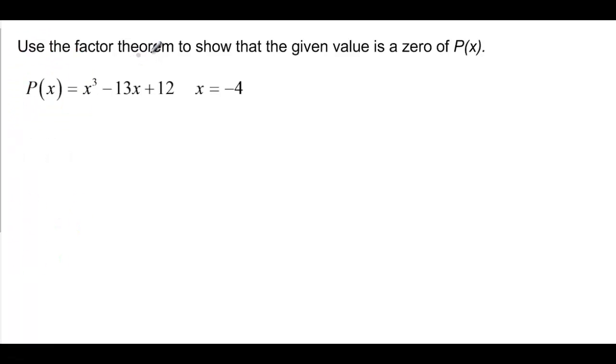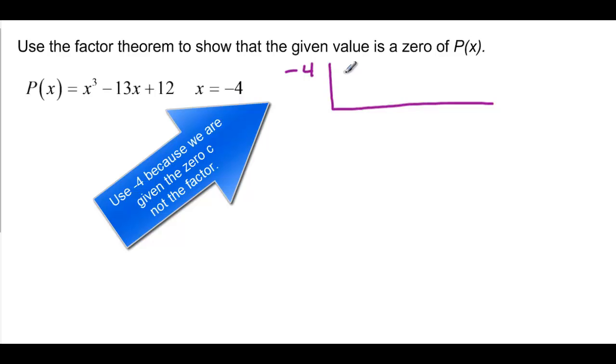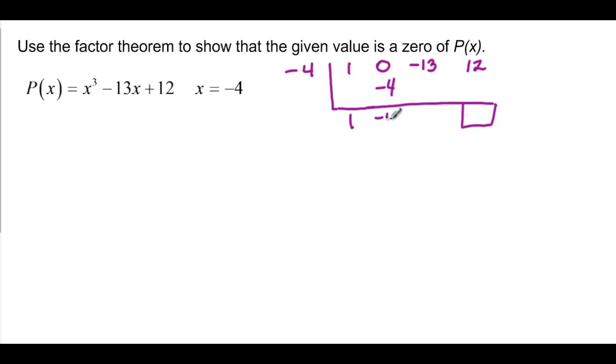Now we want to use this factor theorem again to show that the given value is a 0. So we should be able to use our synthetic division again and say negative 4. And then we have, bring down the 1, multiply, we get negative 4. And adding 0 and negative 4, we get negative 4. Negative 4 times negative 4 would be positive 16. And when we add, we get 3. And 3 times negative 4 is going to be negative 12. And 12 minus 12 is going to give me 0. So yes, it is a 0. And the factor would be X plus 4.